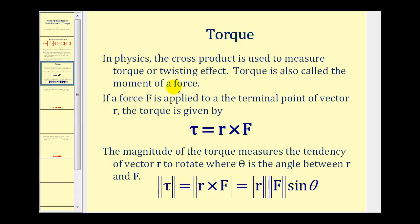If a force F is applied to a terminal point on a vector R, the torque is given by the cross product of vector R and vector F. This tells us the torque vector would be perpendicular or orthogonal to both vector R and vector F. The magnitude of the torque measures the tendency of vector R to rotate, where theta is the angle between vector R and vector F. There are two ways to determine the magnitude of the torque: we can find the magnitude of the cross product of R and F, or we can find the product of the magnitude of R, magnitude of F, and sine theta.